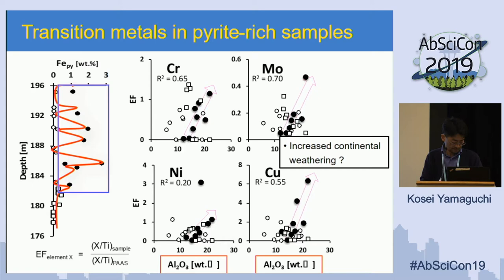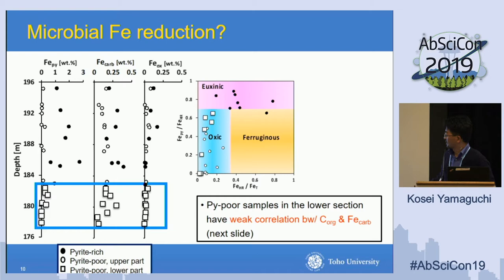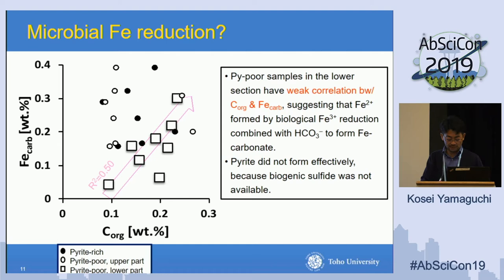Pyrite-poor samples in the lower sections show a correlation between organic carbon content and iron carbonate content. This suggests that ferrous iron formed by biological ferric iron reduction combined with bicarbonate ions to form iron carbonate. Pyrite didn't form effectively because biogenic sulfide was not available in this anoxic environment — so iron(II) combined with bicarbonate, not with sulfide.